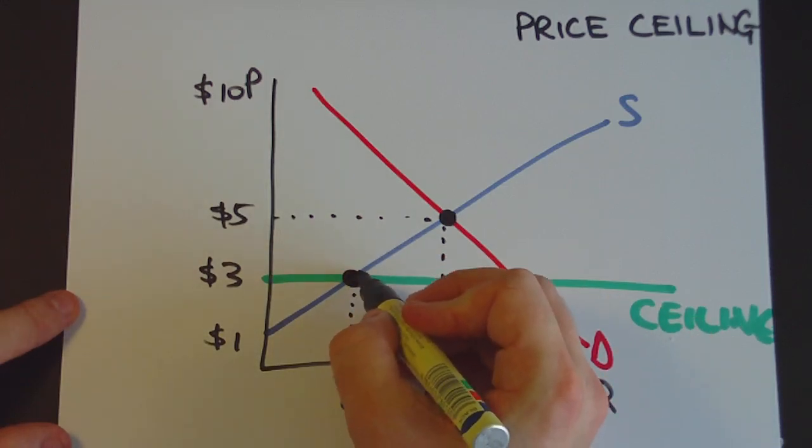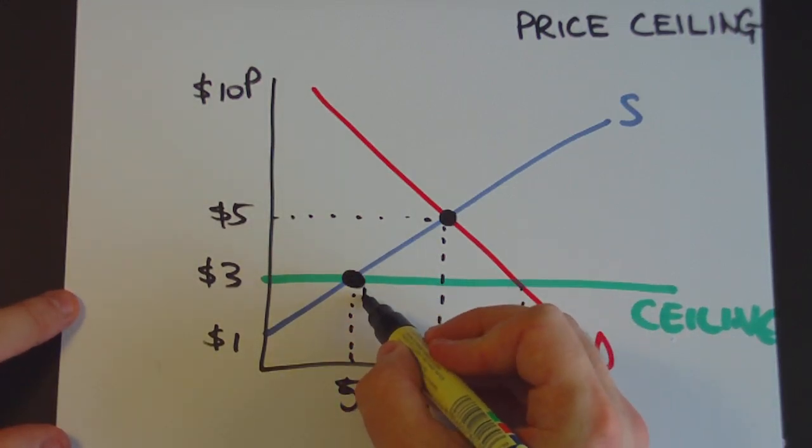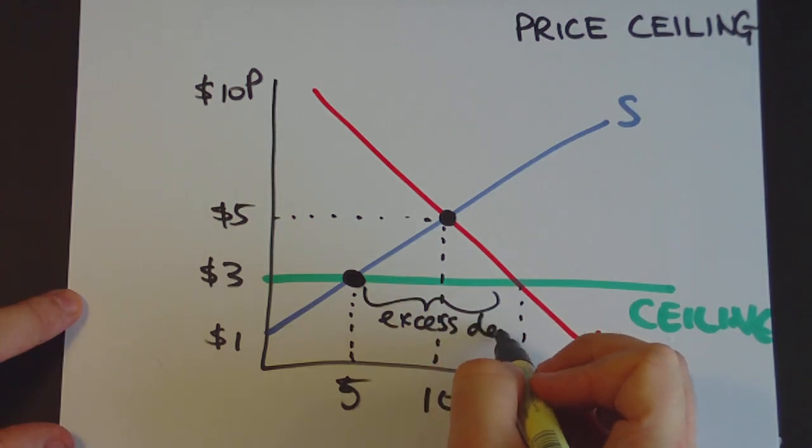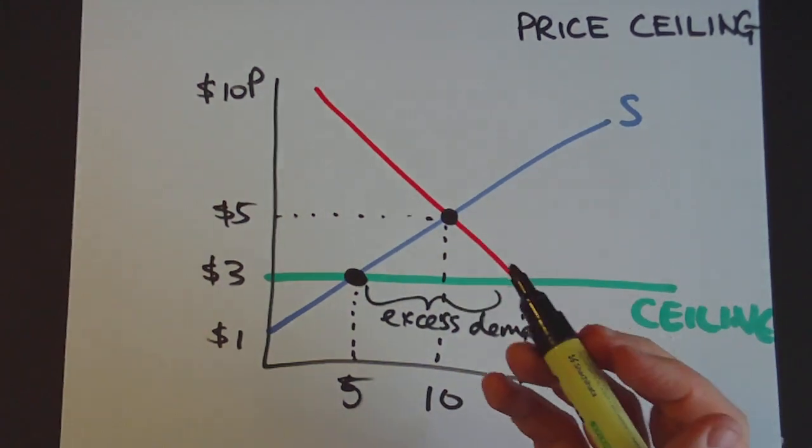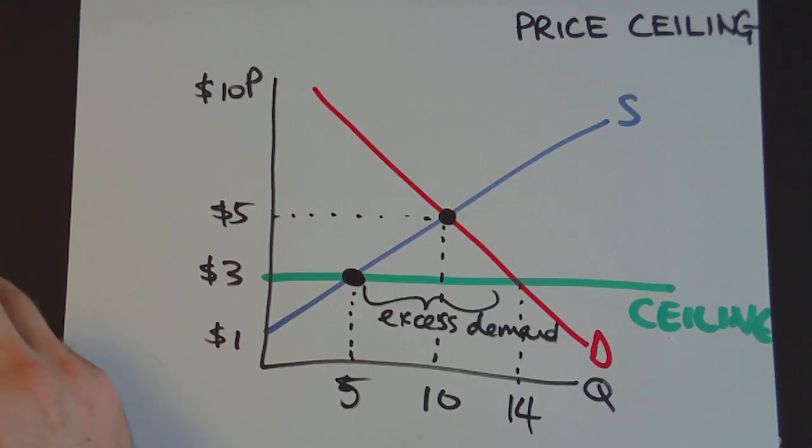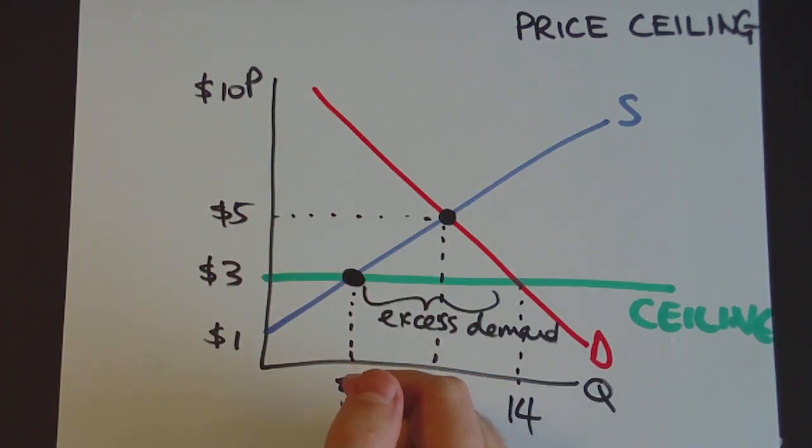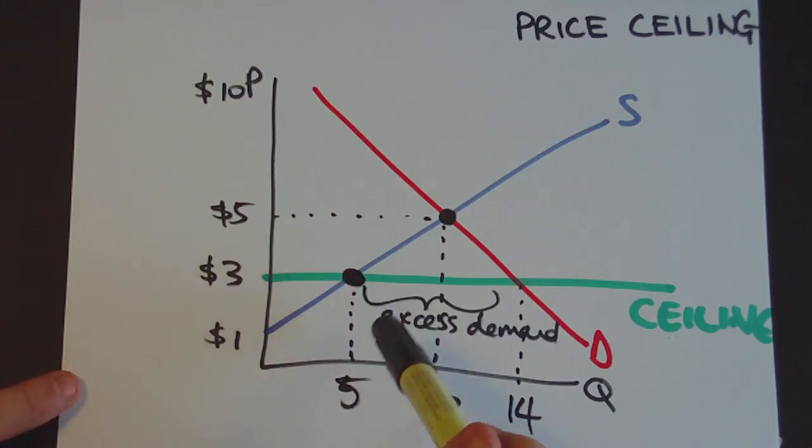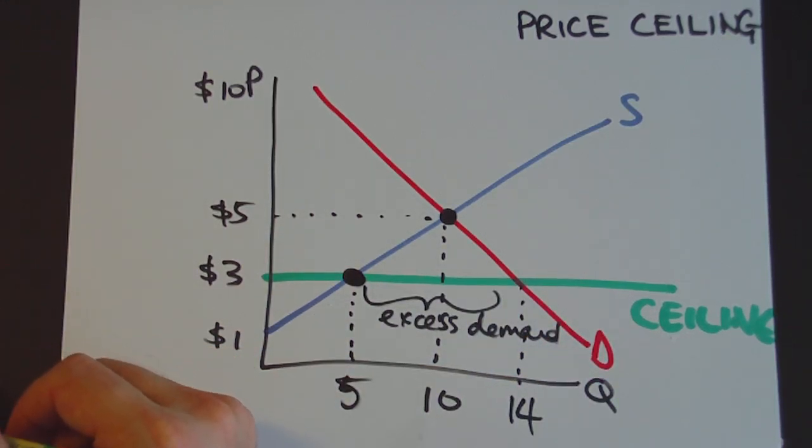So the market actually transacts at this point here, and there ends up being a lot of excess demand, or a shortage. Buyers form queues as they queue up to try to buy the product, or sellers work out some way of rationing these 5 units amongst the 14 customers who would like to buy it.